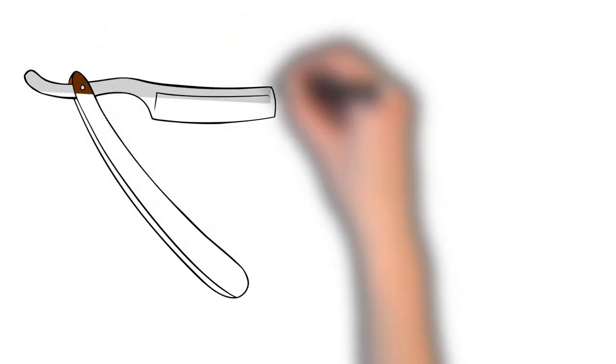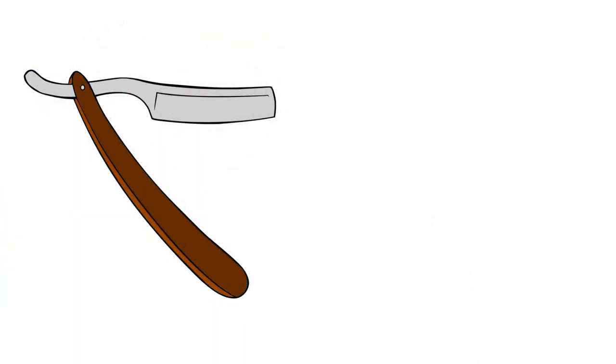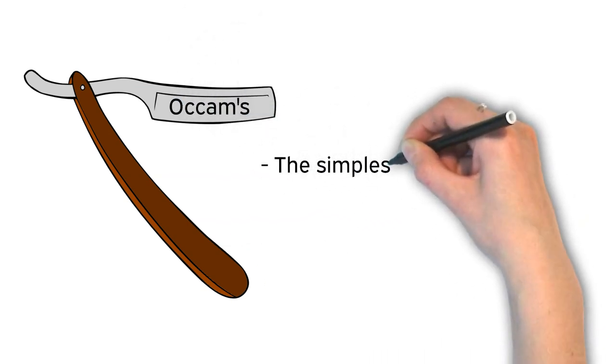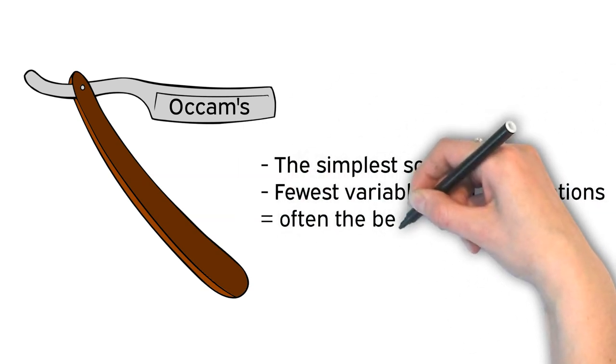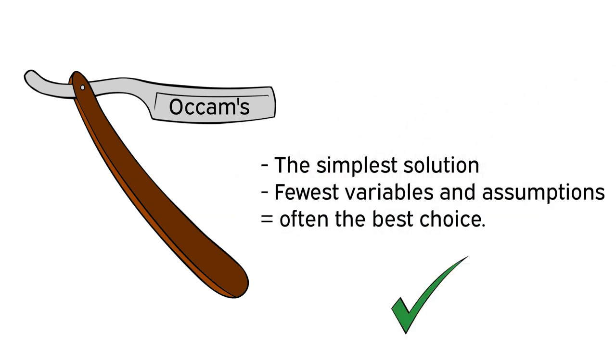Hanlon's razor is very similar to another famous razor, Occam's razor. Occam's razor basically says that typically the simplest solution or the one with the fewest variables and assumptions is usually the best choice.